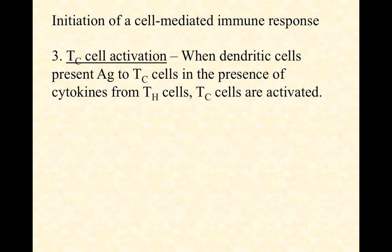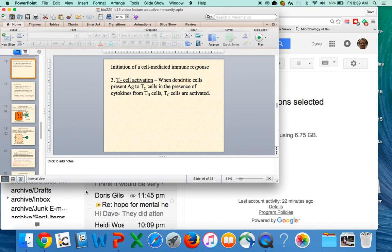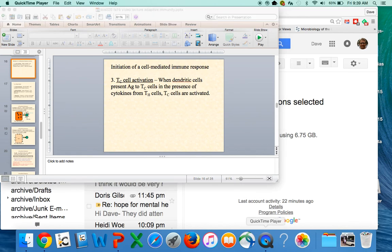The final step in initiating a cell-mediated response is that now the cytotoxic T-cells can be activated. A dendritic cell or other antigen-presenting cell will also present antigen on an MHC molecule to the cytotoxic T-cells — this is all happening at the same time. If the cytotoxic T-cell recognizes that antigen and cytokine is present from helper T-cells who have also recognized that antigen, then and only then can the cytotoxic T-cells be activated. Work your way through that a few times to make sure it makes good sense, and in the next video we'll look at what happens once a cytotoxic T-cell has actually been activated.